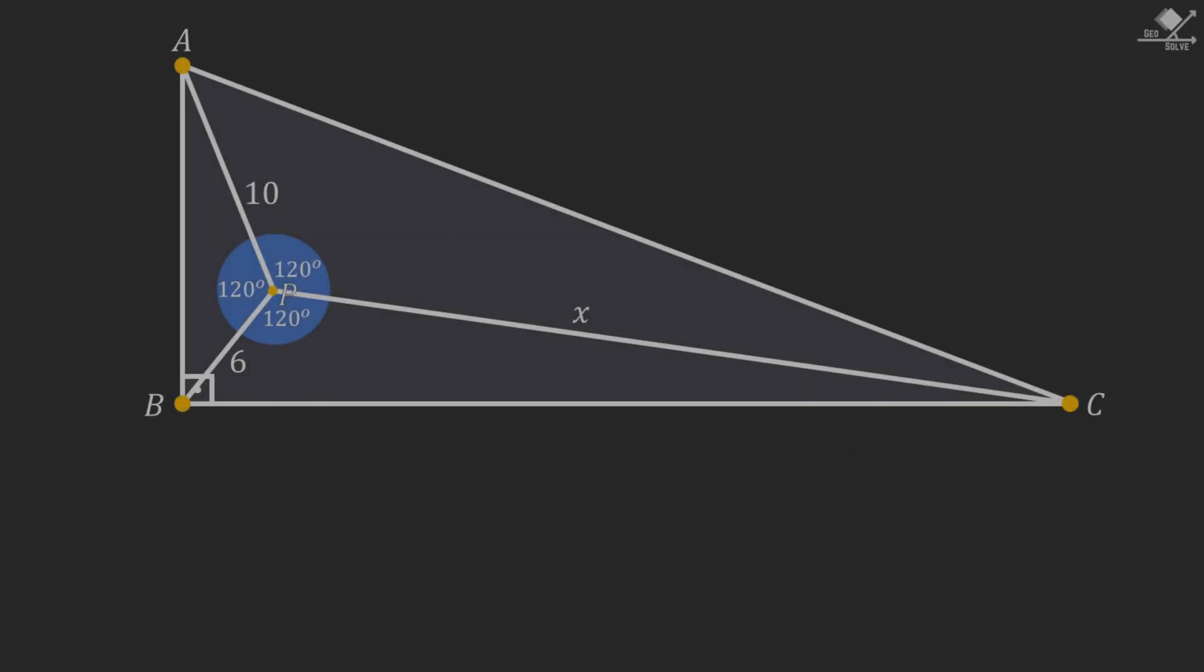In this question, we have this right angle triangle ABC. Three line segments passing through the vertices of the triangle intersect at point P, and they all intersect with a 120 degree angle. We know two of the lengths of the line segments as 6 and 10 units, and we are looking for the length of the third one, which is shown as x.